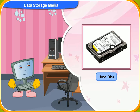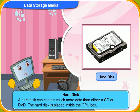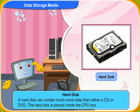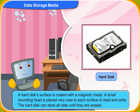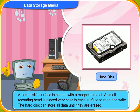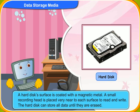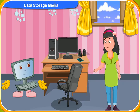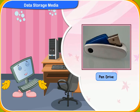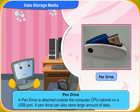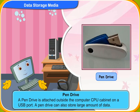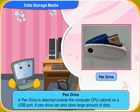A hard disk can contain much more data than either a CD or DVD. The hard disk is placed inside the CPU box. Its surface is coated with a magnetic metal, and a small recording head is placed very near to each surface to read and write. The hard disk can store all data until they are erased. The pen drive is a pen-like device. It is attached outside the computer's CPU cabinet on a USB port. A pen drive can also store a large amount of data, and it is the most convenient device to carry data from one place to another as we can put it in our pocket.